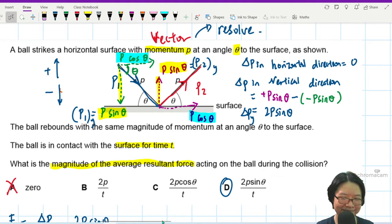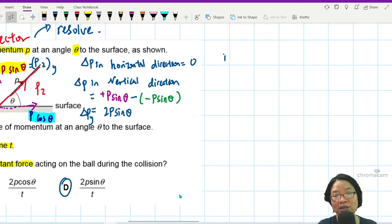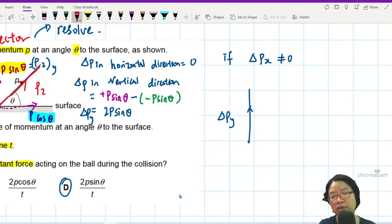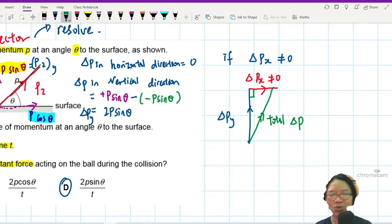But what if the horizontal and vertical also change? Then you have to repeat this in the horizontal direction. Find the delta px. So what you'll do is change in momentum of y is in this direction. Then change in momentum of x is in the x direction. If it's positive you draw to the right, if it's negative you draw to the left. Then if you want to find the total change in momentum, you have to Pythagoras your way through.